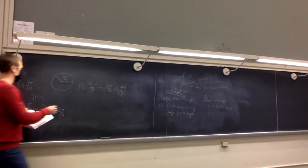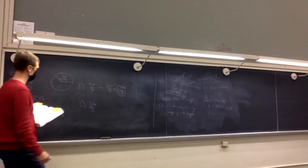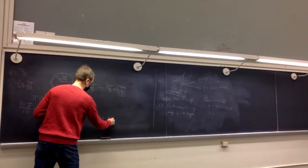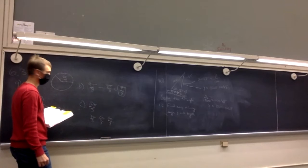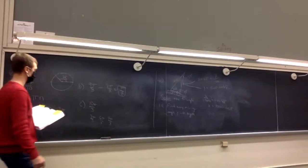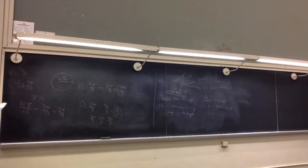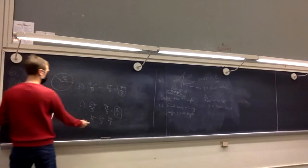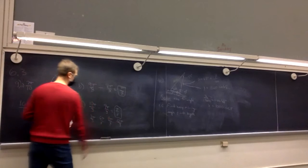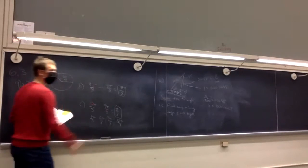For 10π/3: listing multiples of π — 3π/3 = π, 6π/3 = 2π, 9π/3 = 3π. 9π/3 is 1 away and 12π/3 is 2 away, so the closest is 9π/3. Subtract: 10π/3 − 9π/3 = π/3. The process is to list multiples of π, find the closest one to your angle, and subtract. If you get a negative sign, just drop it.